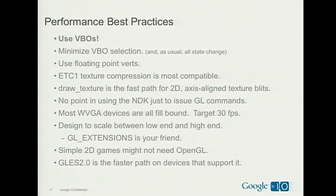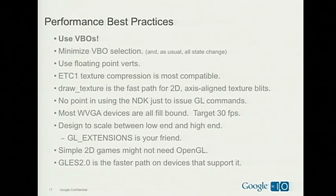Now for best practices to achieve maximum performance — mostly OpenGL-centric. If you take one thing away about performance from this talk, it should be that you must use VBOs — vertex buffer objects — vertex arrays stored in VRAM. There's a huge performance improvement, and they're almost universally supported. That said, you want as few VBOs as possible in memory at any given time because switching between them is expensive. In fact, all OpenGL state change is expensive, so when optimizing your 3D scene, your mantra should be: limit state change.